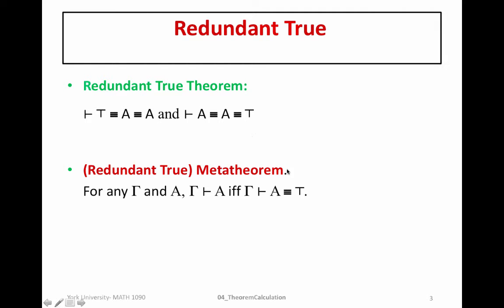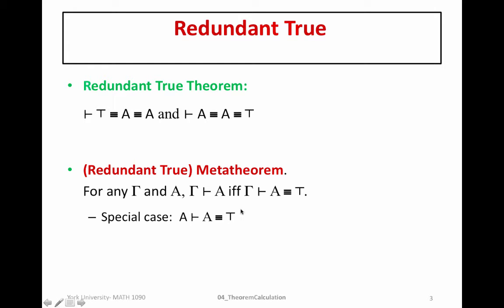The meta theorem applies this redundant true theorem and gives it a bit more semantics and intuition. It gives us a theorem that allows us to derive a relative theorem within logic. This special case says that A proves that A is equivalent to top. This follows directly from the redundant true meta theorem because we know — and proved a few classes ago — that A proves A.